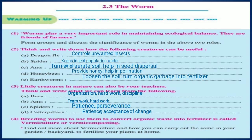In the third question: little creatures in nature can also be your teachers — think and write what we can learn. Every element in nature teaches us something. We have four creatures here. Bees taught us how to organize, how to do hard work, and how to work with discipline. Ants are good team workers, doing their work in teamwork, and they are hard workers as well — they taught us teamwork and hard work.